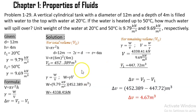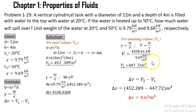After solving for the value of our weight, we can now get the value of our remaining volume. By deriving the formula for specific weight, we have V equals weight over specific weight. Substituting, we divide the weight of 488.41 kN by the specific weight of water at 50 degrees Celsius, which is 9.69 kN per meter cube. Canceling kN, we get a remaining volume of 447.72 meter cube.